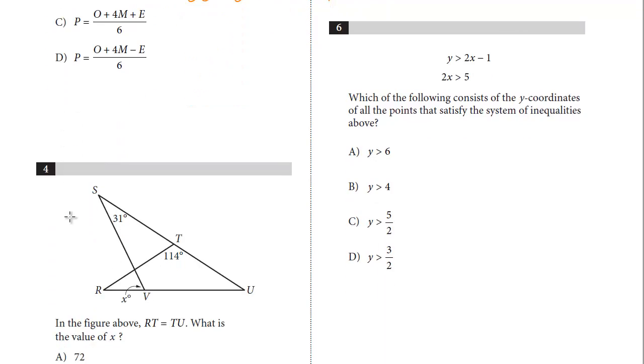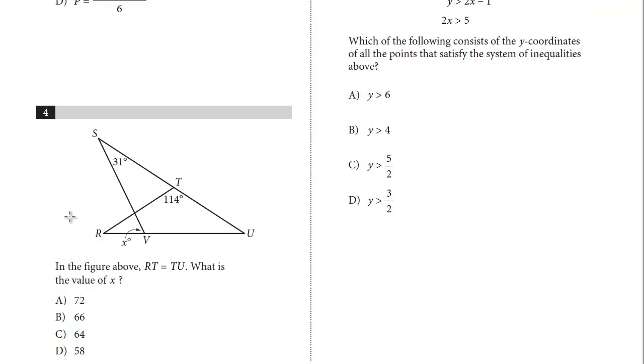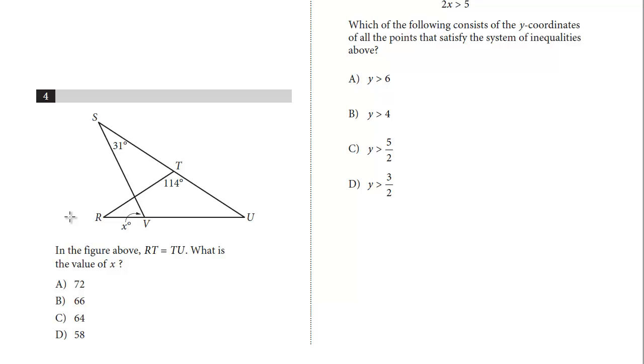Let's take a look at question number 4. This is a geometry question, additional topics in math. In the figure above, RT equals TU. What's the value of x? So RT - here's RT - and TU are equal. So right away you should recognize that this triangle is isosceles. That means this angle equals this angle. And we have to find x. So how do we get x? Let's start with this isosceles. Just focus on this big triangle.